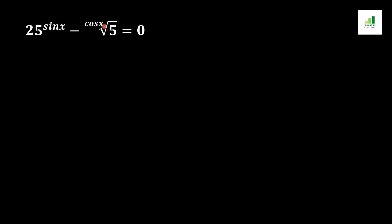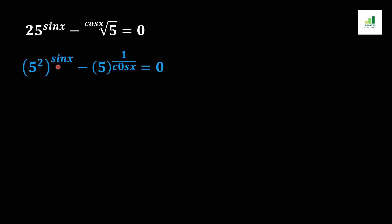To solve this question, first we should convert 25 into 5 squared, with the overall power sine x remaining the same. And 5 under root 5 having power cos x will convert into 5 to the power 1 over 2 times cos x.